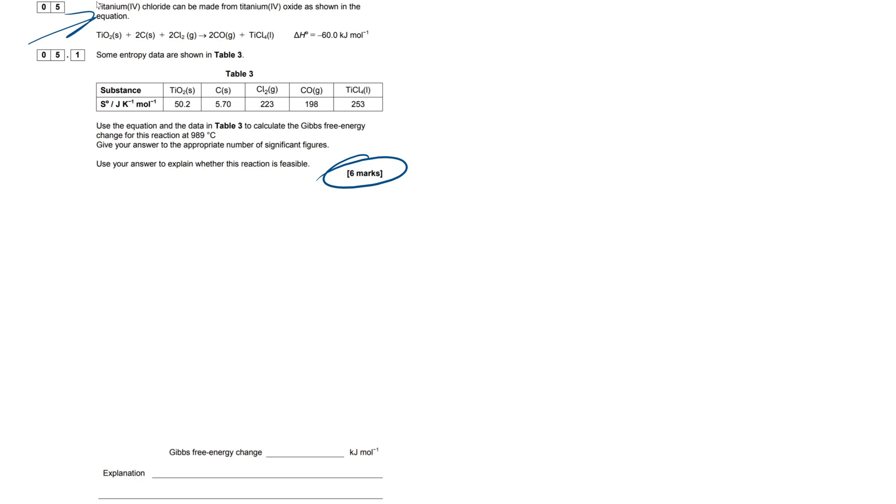So first off, as always, let's just read through the question. Now this is meant to be an interactive video where you attempt the question yourself, see where you go wrong and take it from there. Practice makes perfect in chemistry. So we've got titanium(IV) chloride which can be made from titanium(IV) oxide as shown in this equation here. Given this equation and we have our enthalpy change here of minus 60 kilojoules per mole. So straight away you should be thinking exothermic reaction. That may not be incredibly useful for this question, but in other energetics and thermodynamics questions the fact that we know it's exothermic can be incredibly useful.